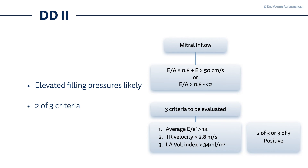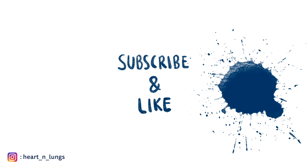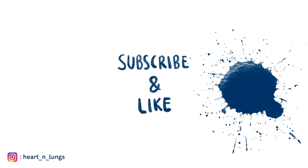If you can only measure two criteria out of three — for example, the average E to E prime and the left atrium volume index — and both are positive, this is still sufficient and is again Diastolic Dysfunction Grade 2. If you can measure all three and all three are positive, but we do not have a restrictive filling pattern, it is still Diastolic Dysfunction Grade 2.